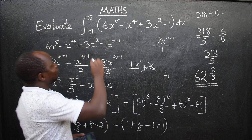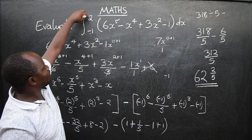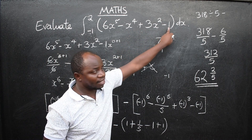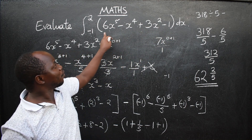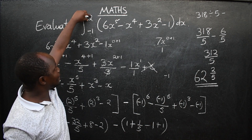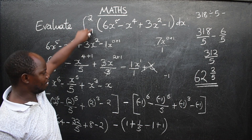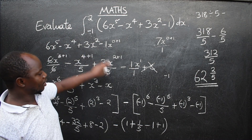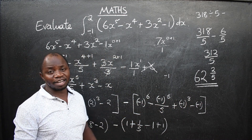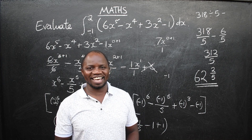To summarise: when dealing with integral calculus that has limits, first integrate, then substitute the upper limit, put a minus, then substitute the lower limit, and use the calculator to simplify. I hope this is clear.